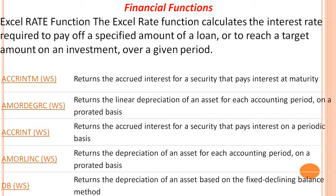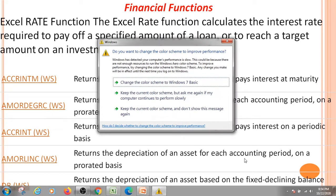You can have an amount which means you can have an interest or you don't have to say anything. You can tell the values and you can tell them the financial functions.